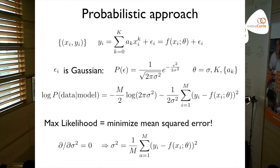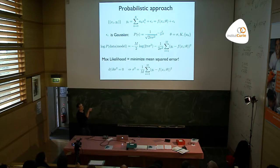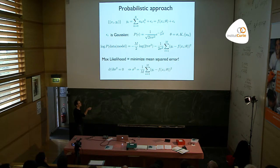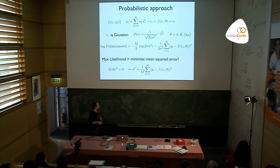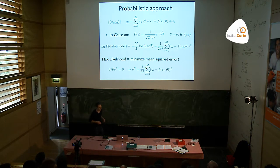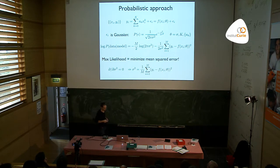Sigma was also a parameter of the model, and you can also maximize this likelihood with respect to sigma squared. If you do this algebra — it's very simple — the sigma that best explains the model is also the mean square error. So you try to minimize the mean square error and the mean square error you find is exactly the most likely experimental error, which is not so much of a surprise.